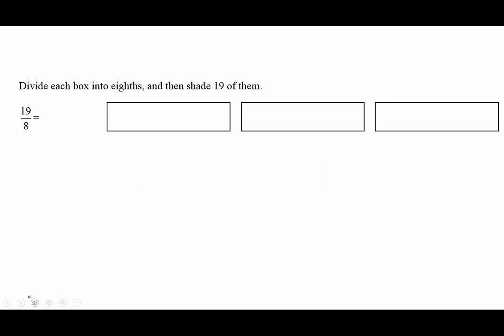Next, 19/8. What does 19/8 mean? Let's divide each of our boxes into eighths and shade 19 of those eighths. I have all my boxes divided into eighths and now I'm going to shade 19 of them.